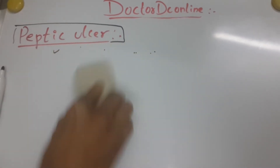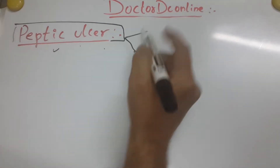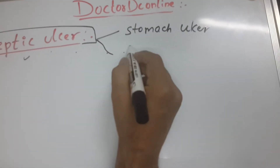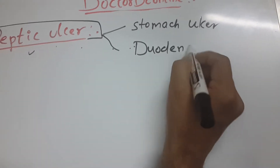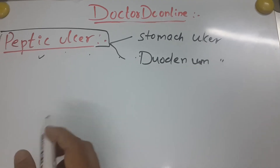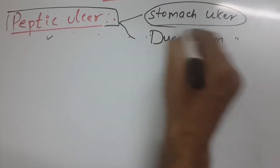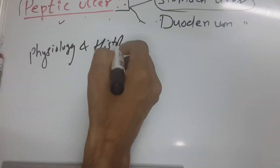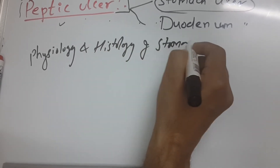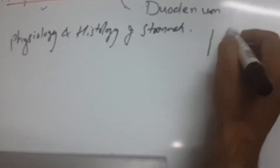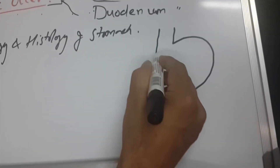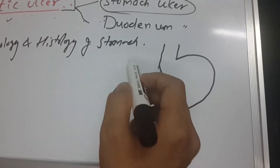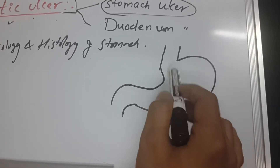Before we go into peptic ulcer, we are going to discuss stomach ulcers and duodenal ulcers. Before that, I want to cover the physiology and histology of the stomach, so that we can easily understand how it is regulated and how its physiology works.